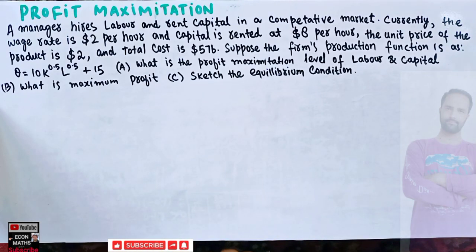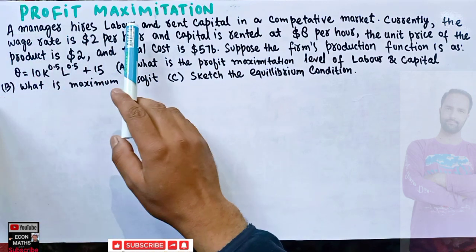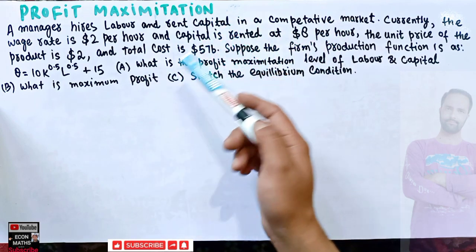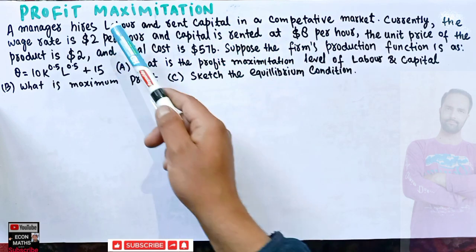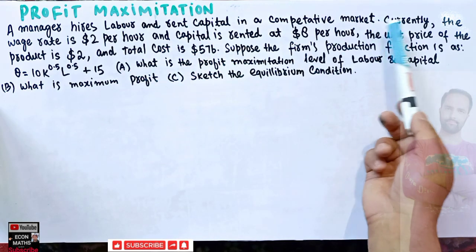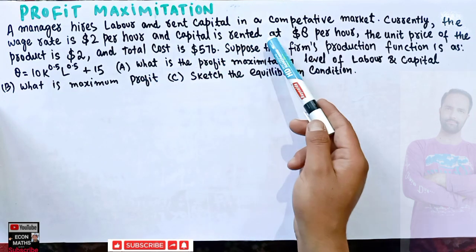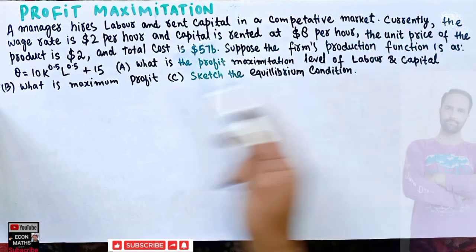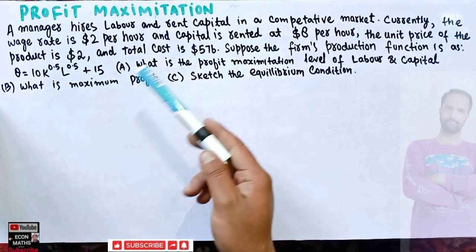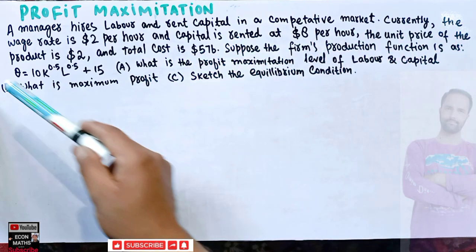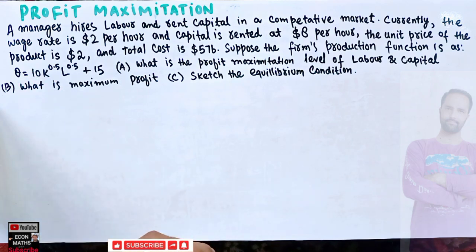Let us solve a question on constrained optimization regarding profit maximization. A manager hires labor and rents capital in a competitive market. The wage rate is two dollars per hour for labor, capital is rented at eight dollars per hour, the unit price of the product is two dollars, and the total cost is 576 dollars. The firm's production function is q = 10K^0.5 * L^0.5 + 15.